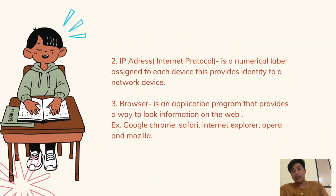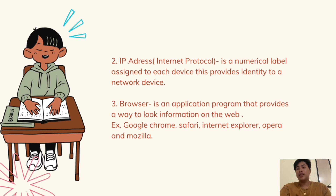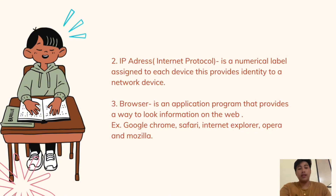Number two: IP Address, or Internet Protocol. It is a numerical label assigned to each device that provides identity to a network device. Number three: Browser. A browser is an application program that provides a way to look up information on the web. Examples include Google Chrome, Safari, Internet Explorer, Opera, and Mozilla.